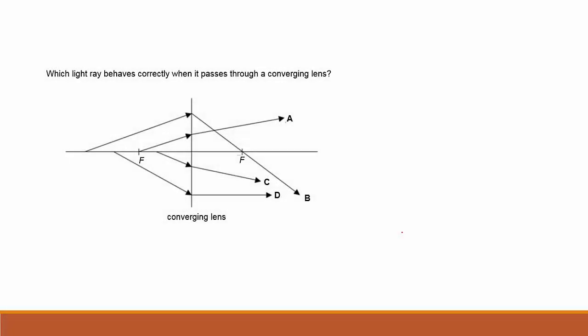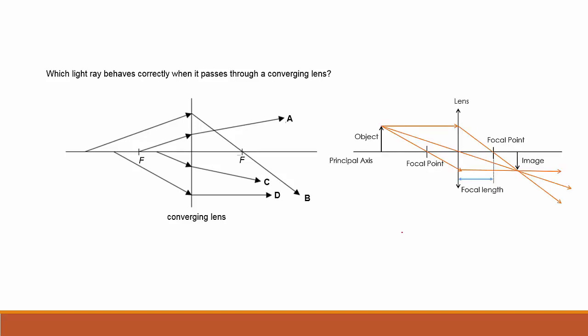In this lesson we're going to practice some lens questions. This question asks which ray behaves correctly when it passes through a converging lens. We have to understand what are the light rays that pass through a converging lens and how they will behave. For some MCQs we can go by elimination.